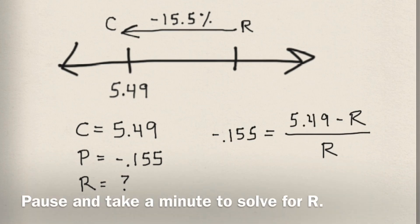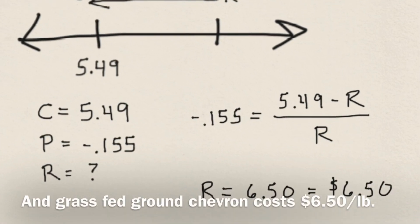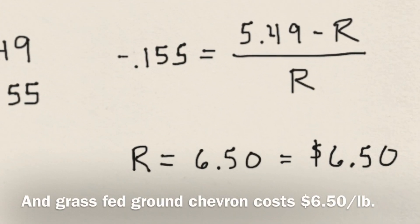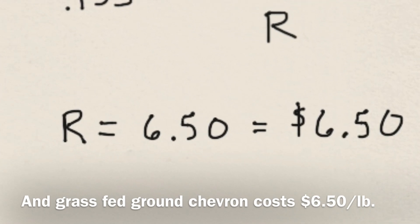Pause and take a minute to solve for r. And grass-fed ground chevron costs $6.50 a pound.